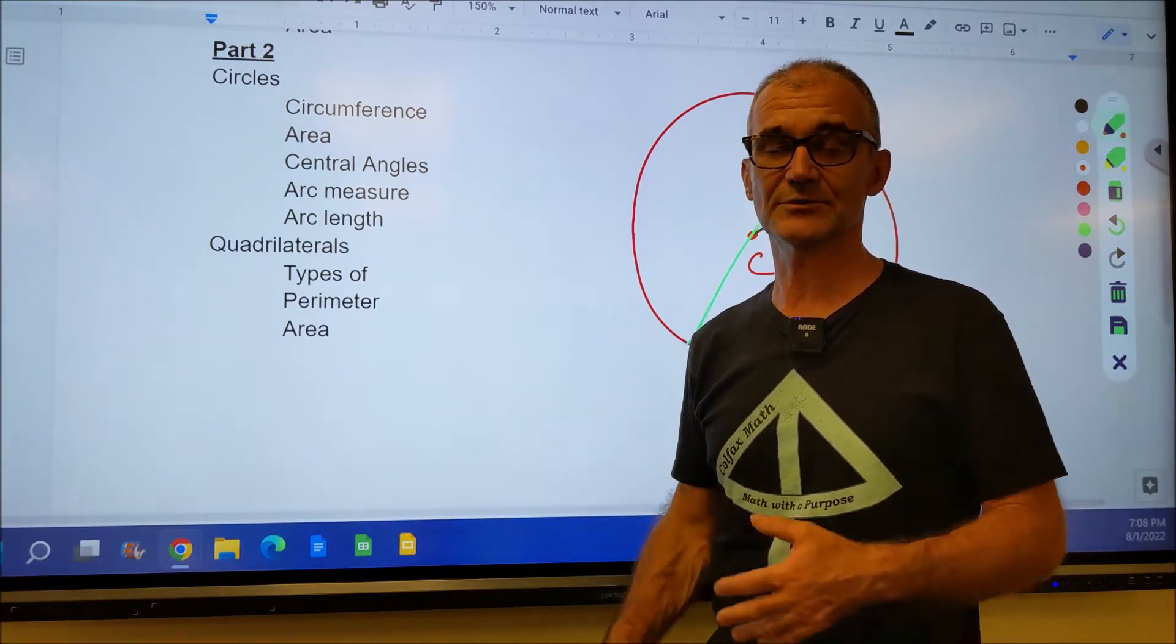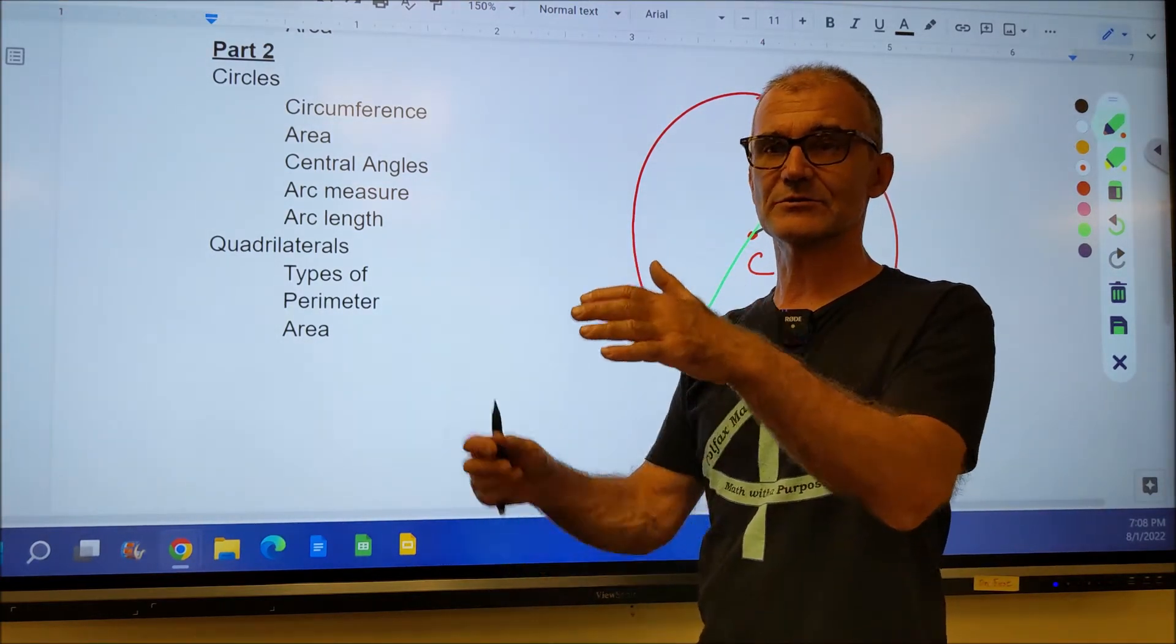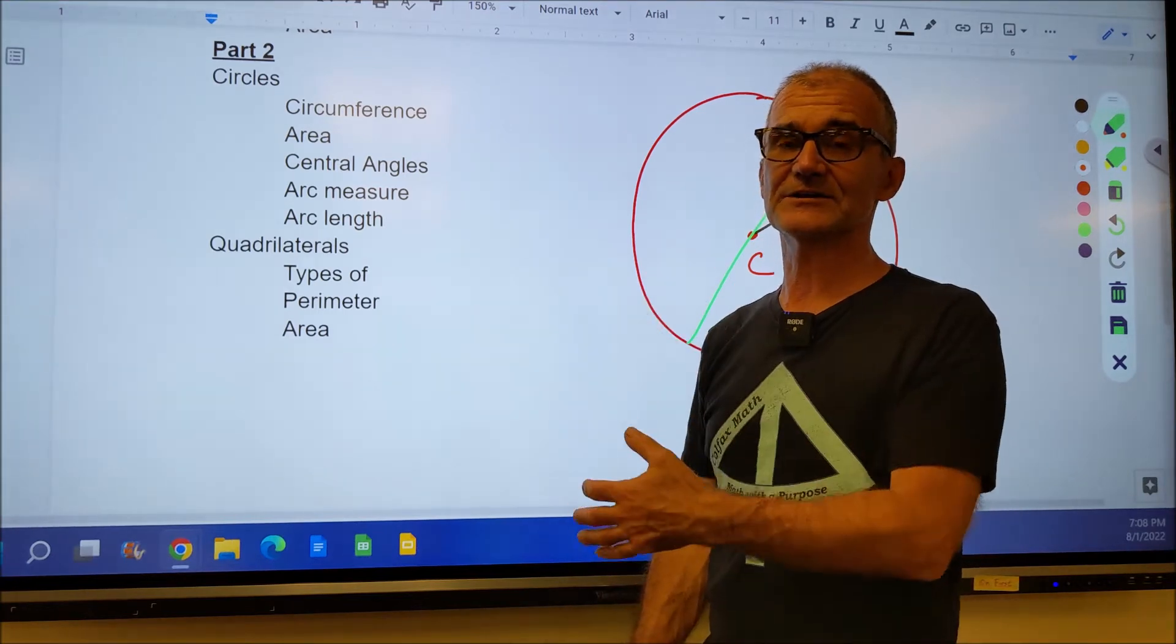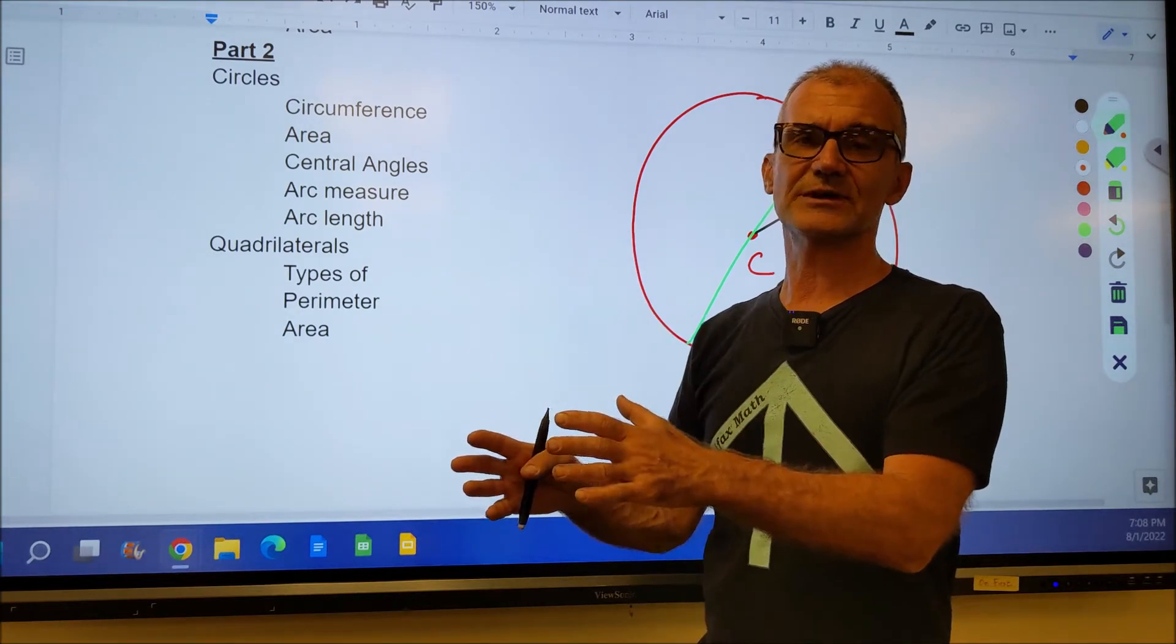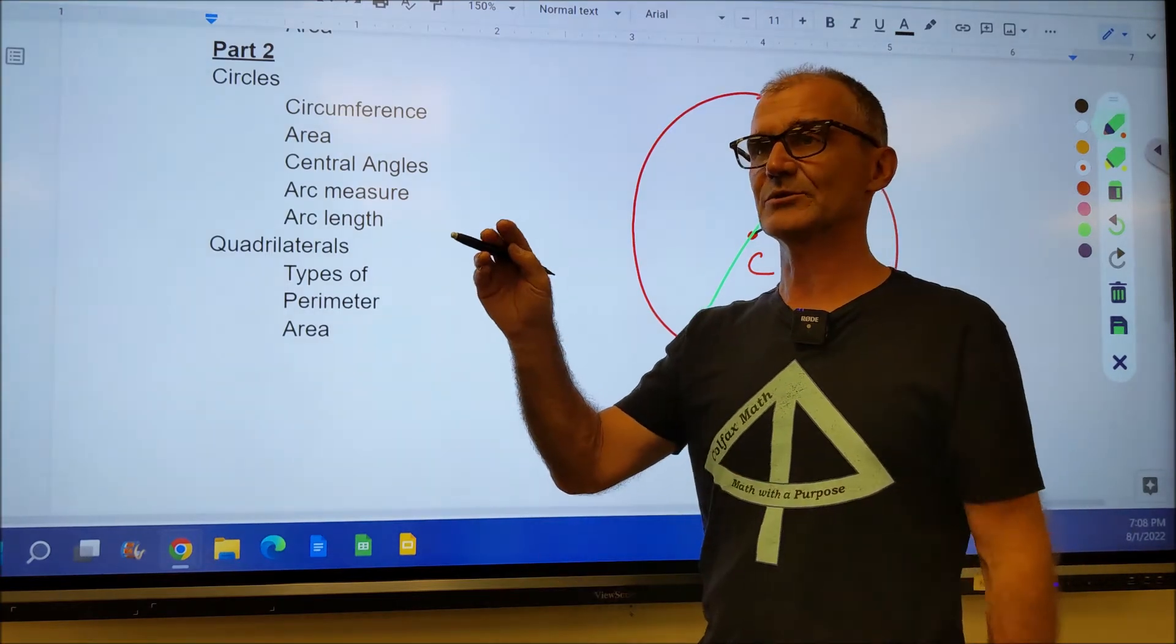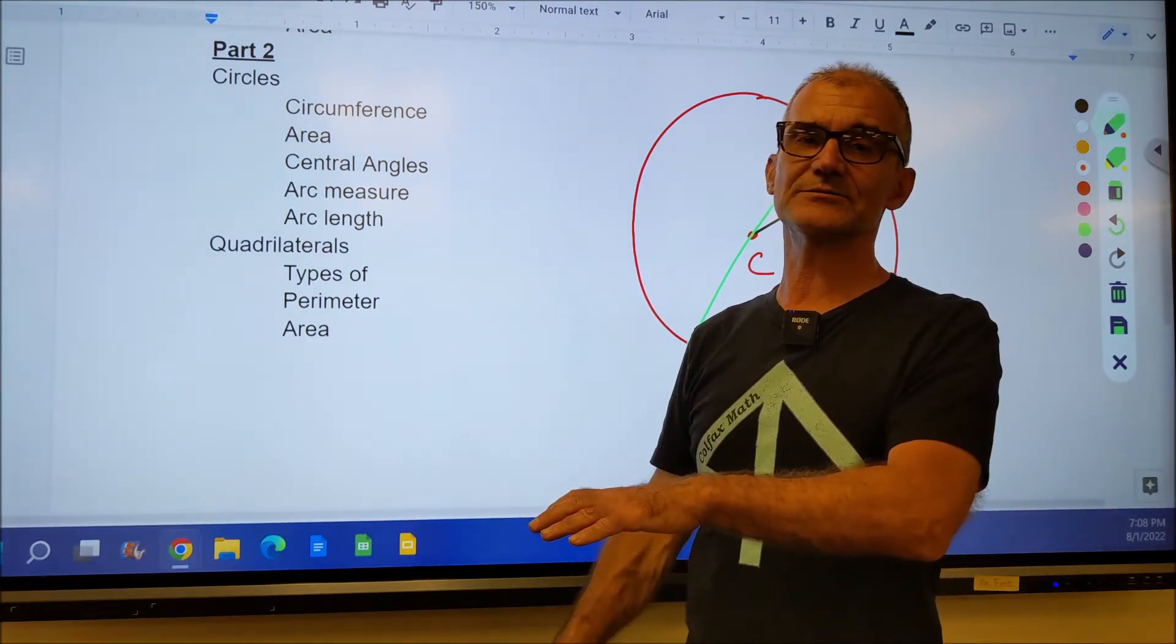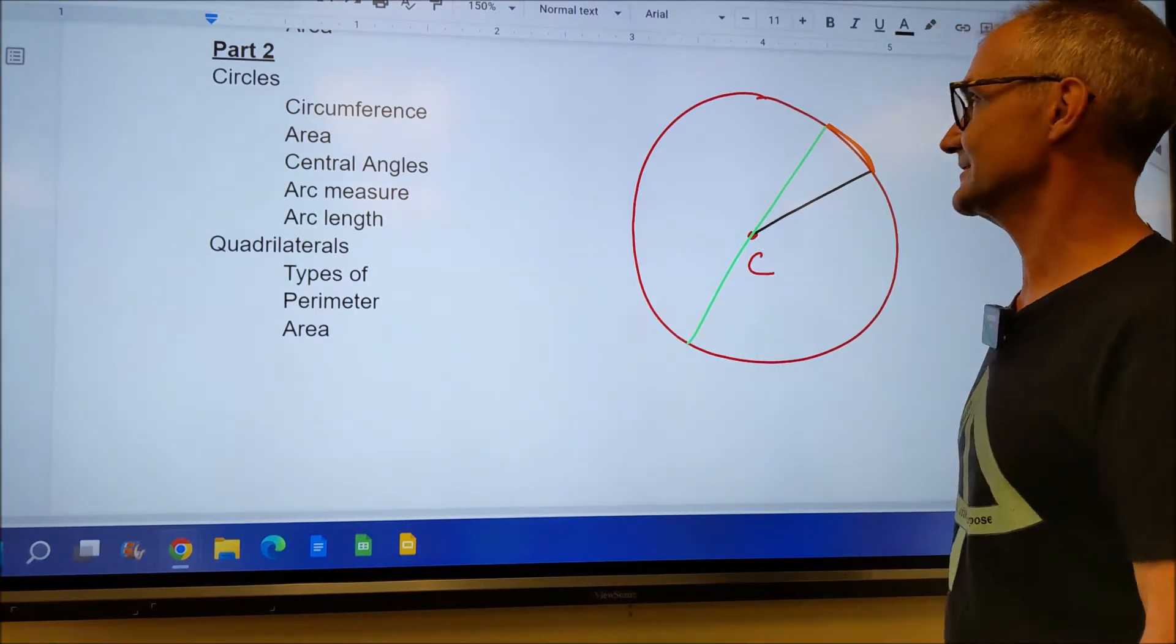A lot of these standardized math tests are really based on vocabulary, even the math portion. So knowing all these words is really important. What I would do is have a notebook in front of me and take notes. Label the top of the page chapter one, chapter two, take all your notes, do the practice problems, and then you could refer back to them. The final exam for this course is going to be in two parts: a practice arithmetic reasoning exam, and then also a practice mathematical knowledge exam.